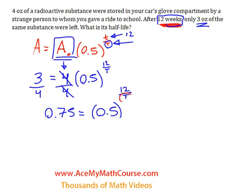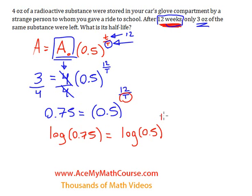Now, what can we do to solve for this? We're going to have to log both sides of the equation. We're going to take the log of 0.75, and that's going to equal the log of 0.5 to the power of 12 over big T. Why are we doing this? Because that's the only way to bring down the exponent so we can solve properly for big T — and that's a property of logarithms. Since you have an exponent here, 0.5 to the power of 12 over big T, you can bring this down and multiply it by the log.